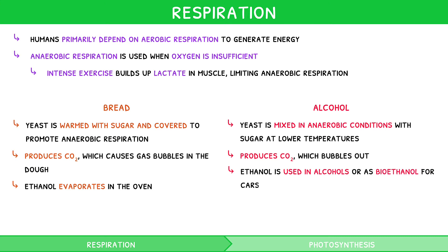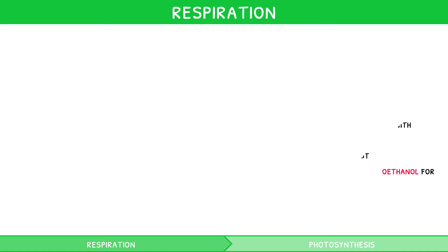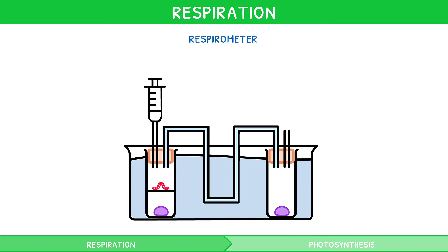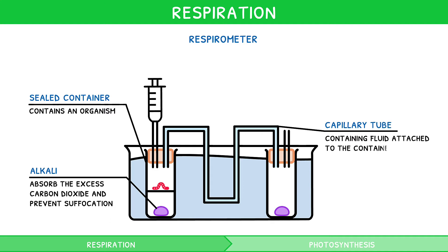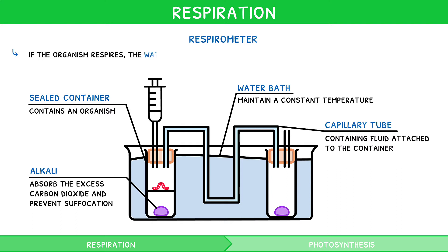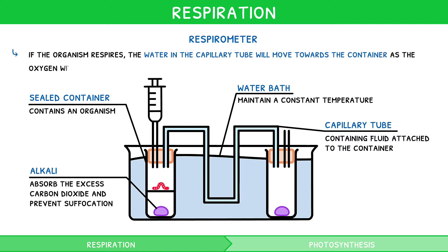This ethanol is used in alcohols or purified and dehydrated to form bioethanol for cars. But how can you really measure this respiration? This is the role of a respirometer. This apparatus consists of a sealed container containing an organism, an alkali to absorb the excess carbon dioxide and prevent suffocation, a capillary tube containing fluid attached to the container, and a water bath to maintain a constant temperature throughout the experiment. To observe respiration, the organism is left for a period of time, and if the organism respires, the water in the capillary tube will move towards the container as the oxygen within the container is consumed.